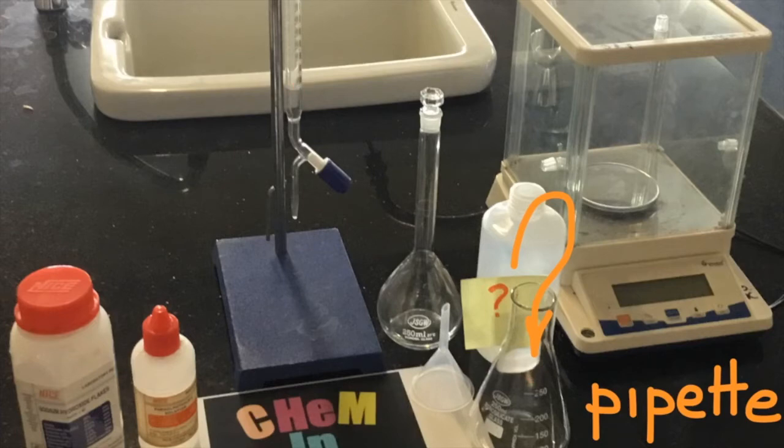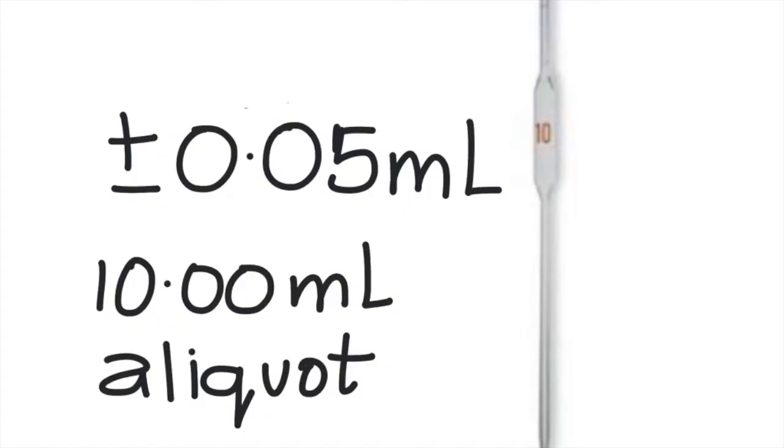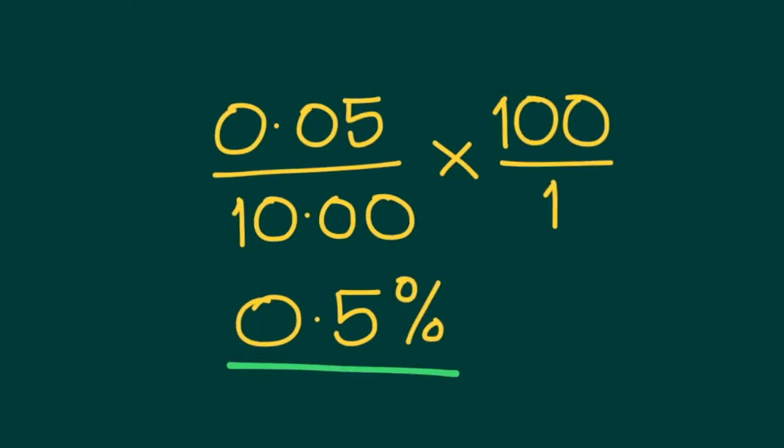and then sodium hydroxide was titrated against hydrochloric acid. But the pipette also comes with its uncertainty. A 10ml pipette, like a burette and a volumetric flask, is a very accurate tool. But its uncertainty is 0.05 millilitres. Given that we used a 10ml volume for the HCl, the associated uncertainty and percentage error here is 0.5%.